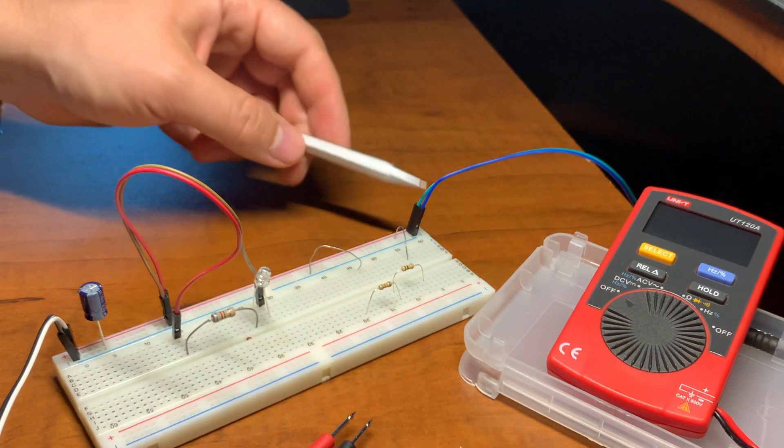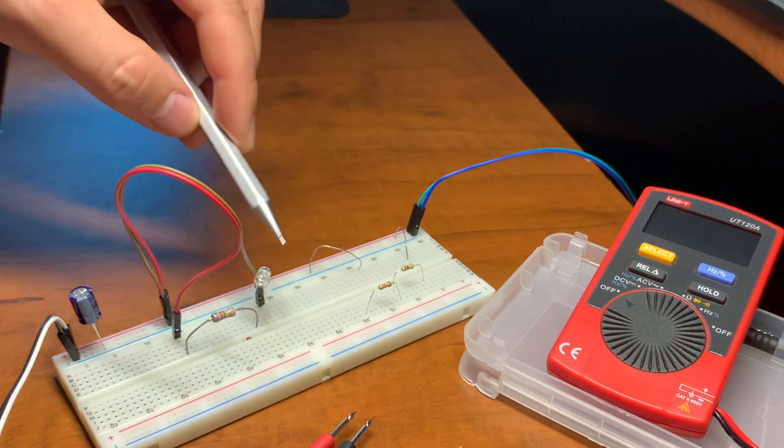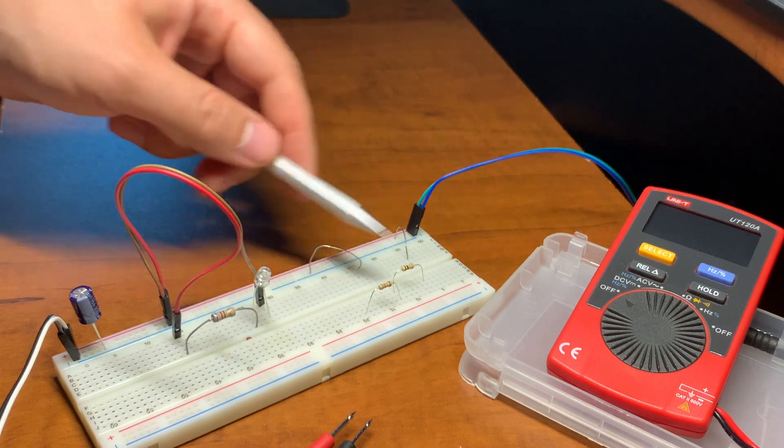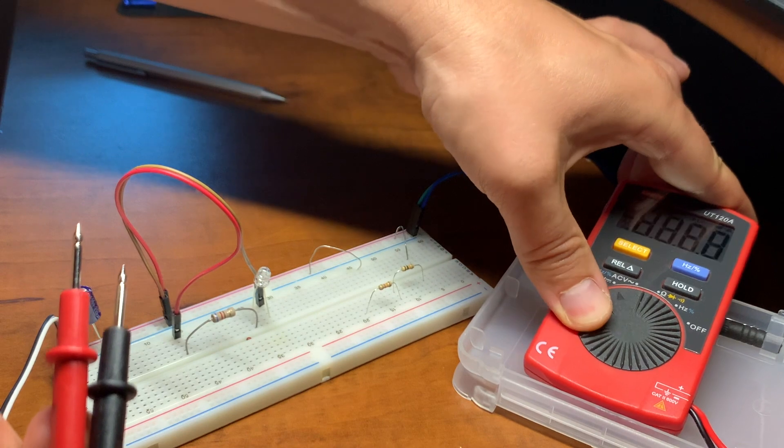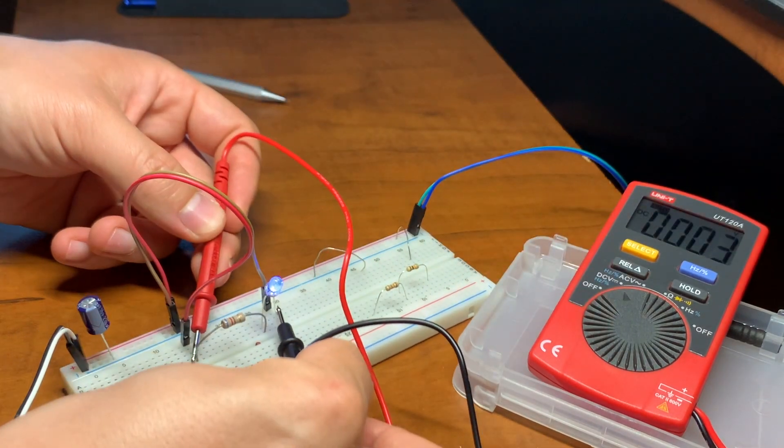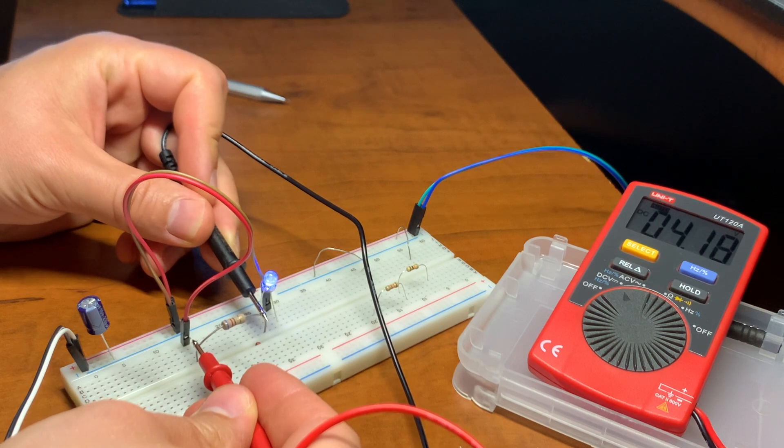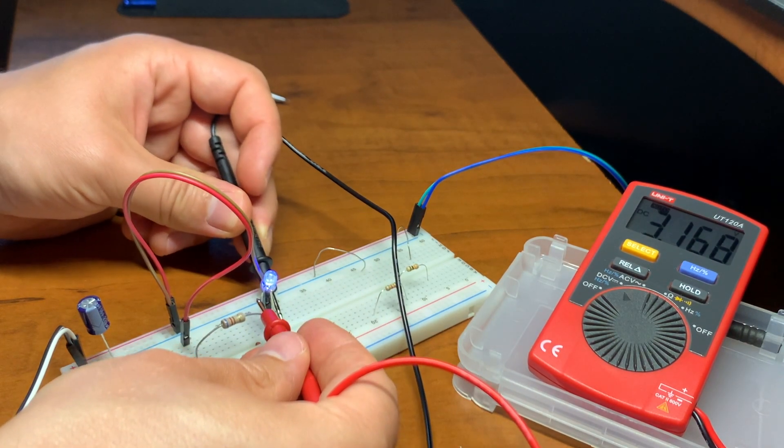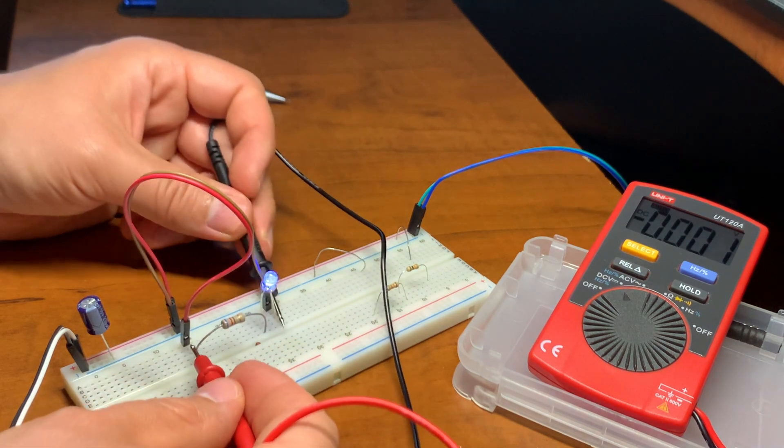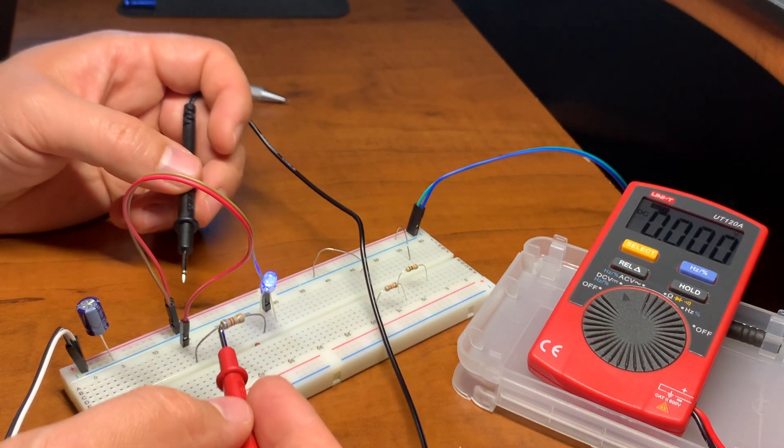I have a breadboard here with AC voltage, some DC voltage and LED, a few resistors so we can do some measurements. Okay so let's start with DC voltage. You can see it measures it pretty quickly. It ranges very quickly.